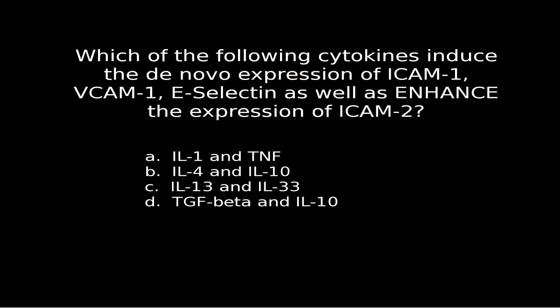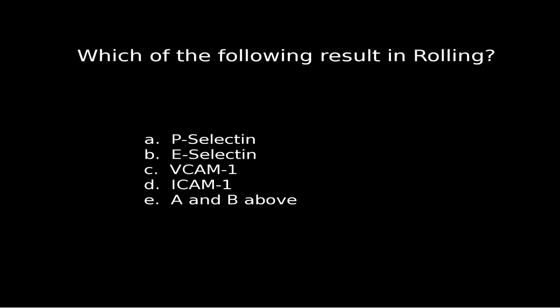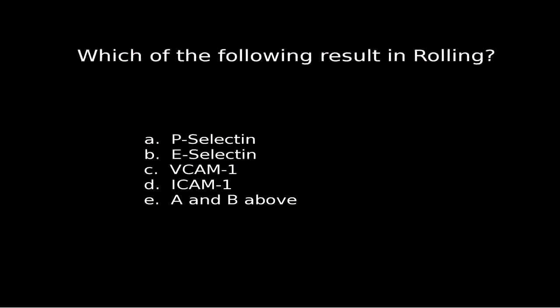Going to the last one there, TGF-beta and IL-10 — particularly IL-10 — are going to turn down the fight in terms of inflammation. Number twelve: which of the following results in rolling? Remember, rolling is that first step, then firm adhesion, then diapedesis. So rolling is going to be P-selectin — which is prepped and just translocated with histamine — and E-selectin, which is going to be increased with IL-6.